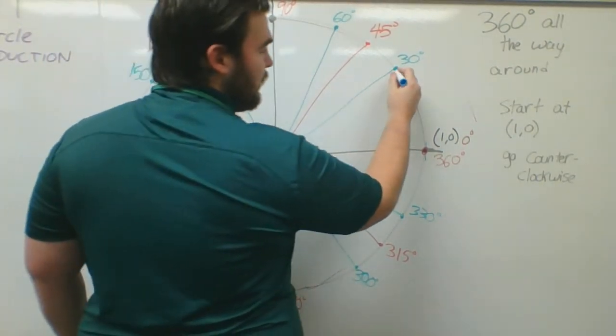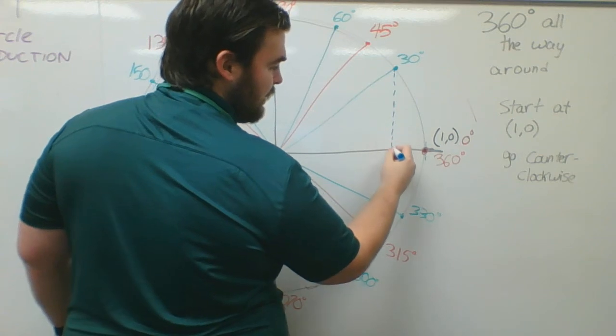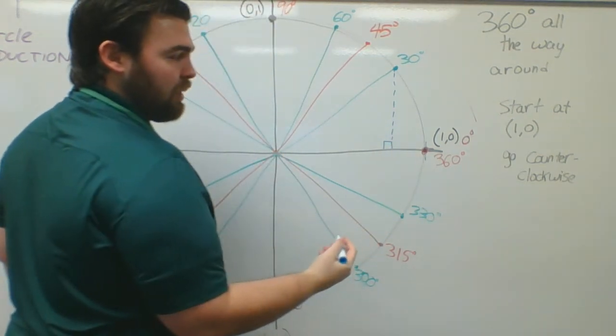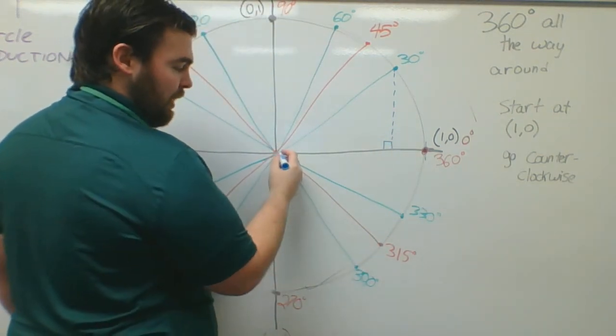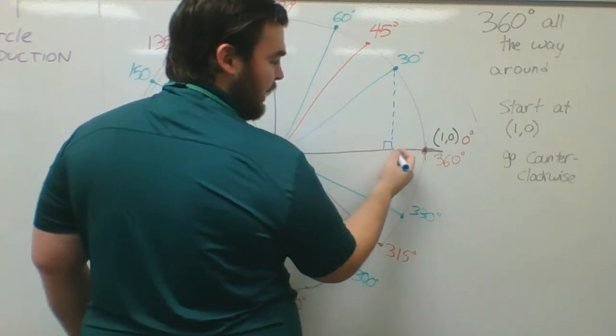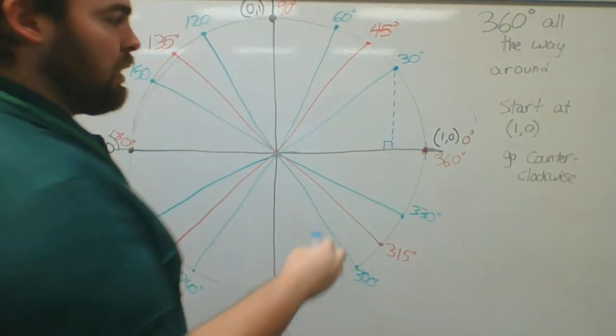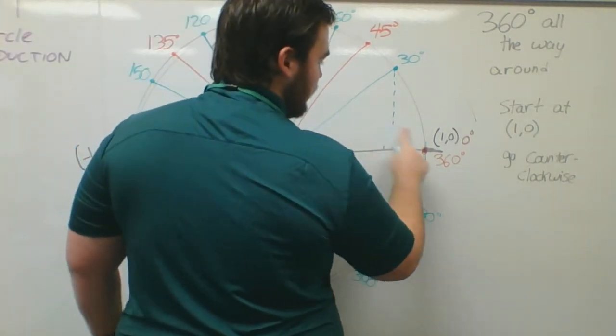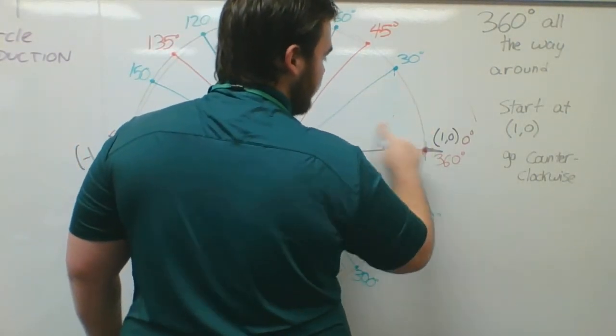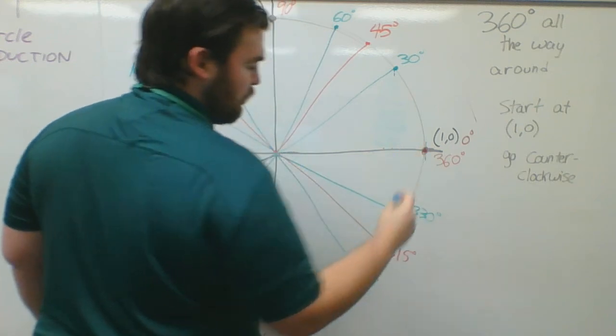One thing we're going to talk about in 1.2 part 2 is what each one of these means. You don't have to draw this, but I can make a right triangle at any point and figure out how long each section is. We'll get to that eventually.